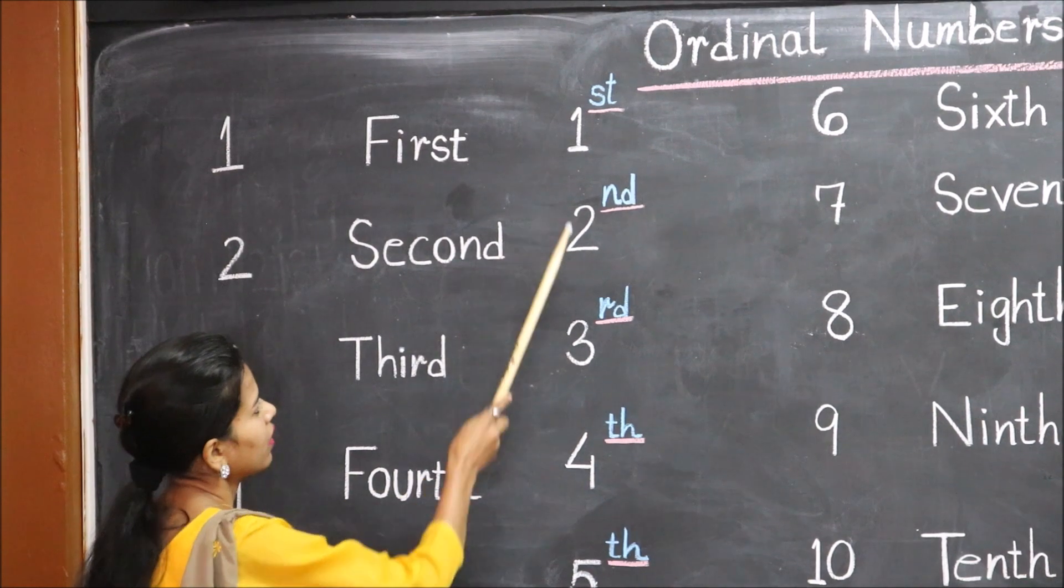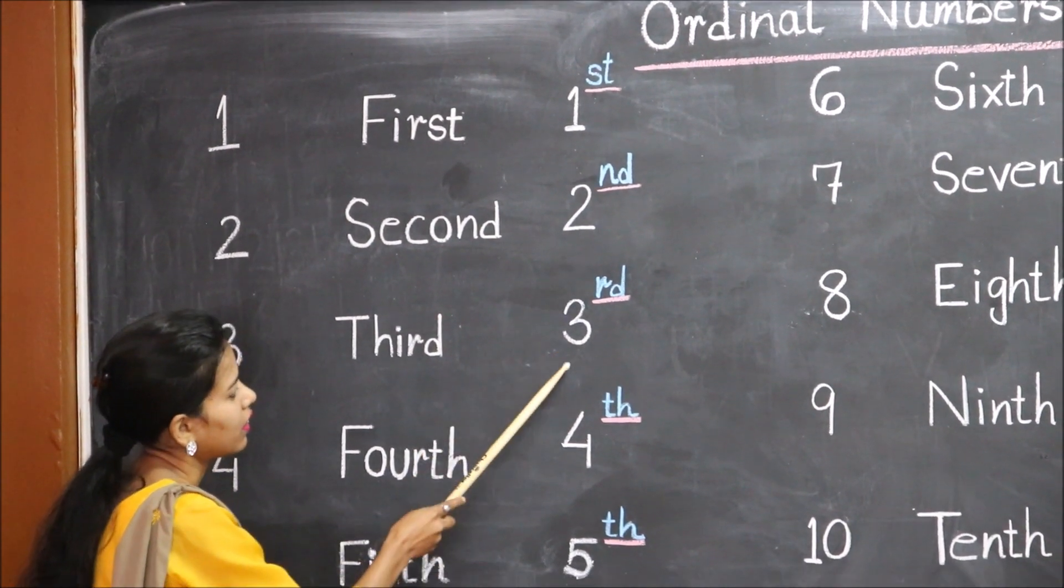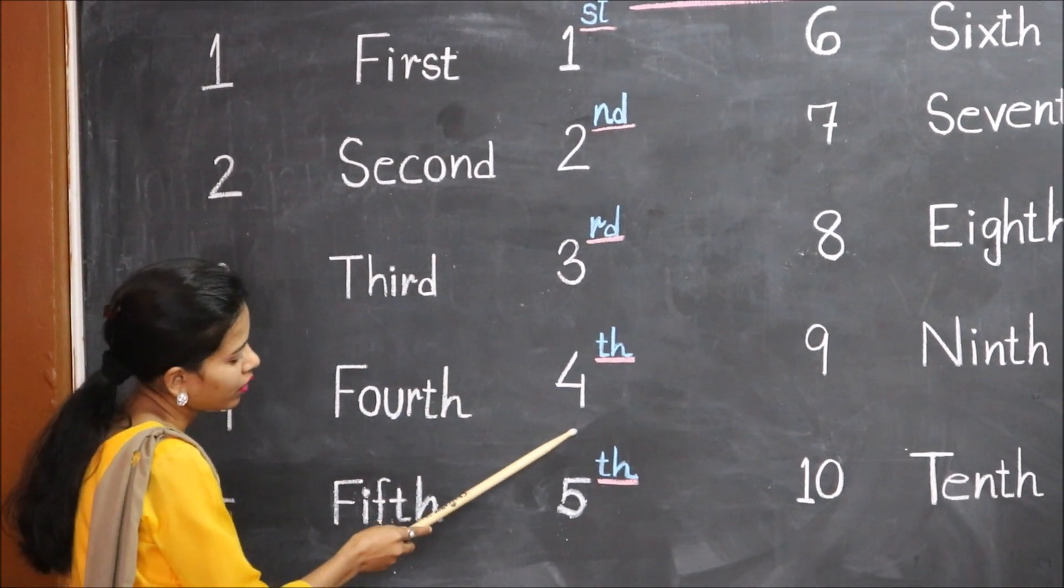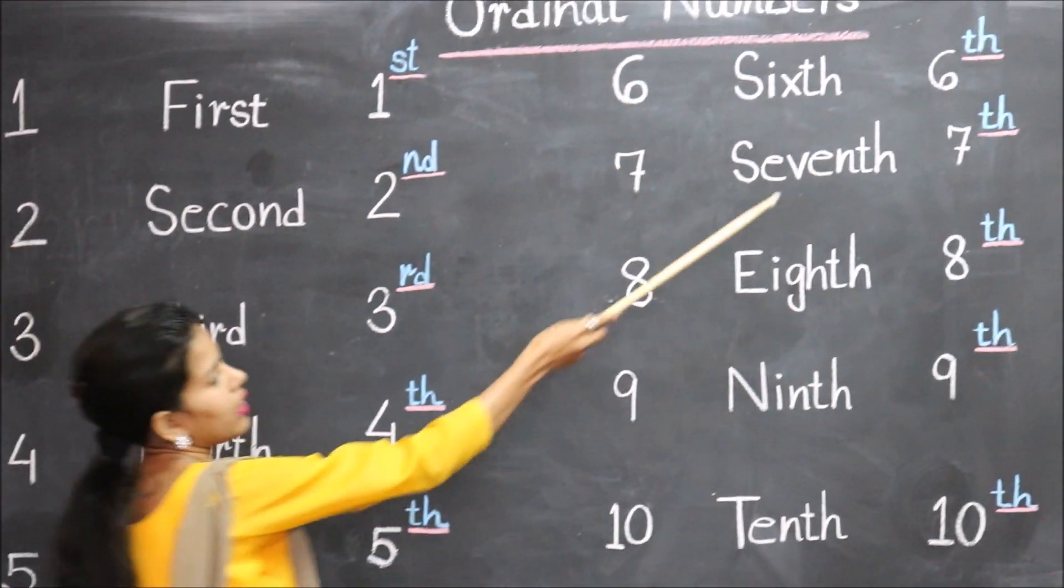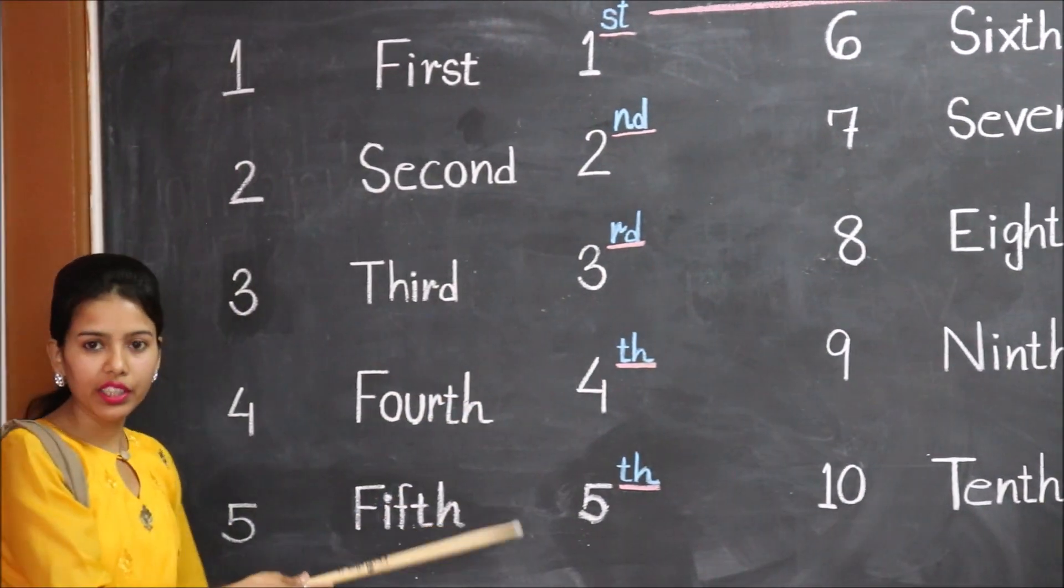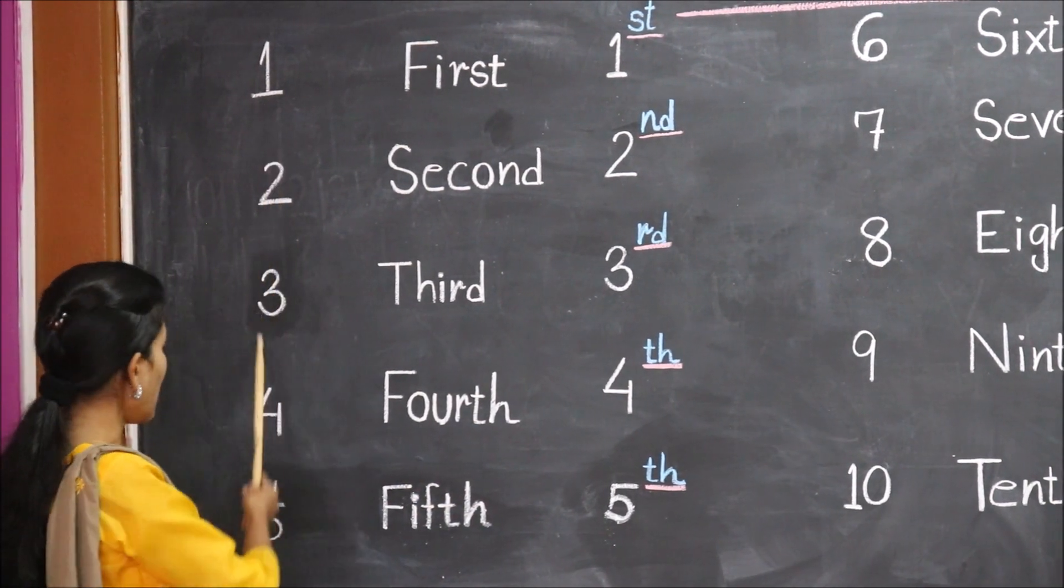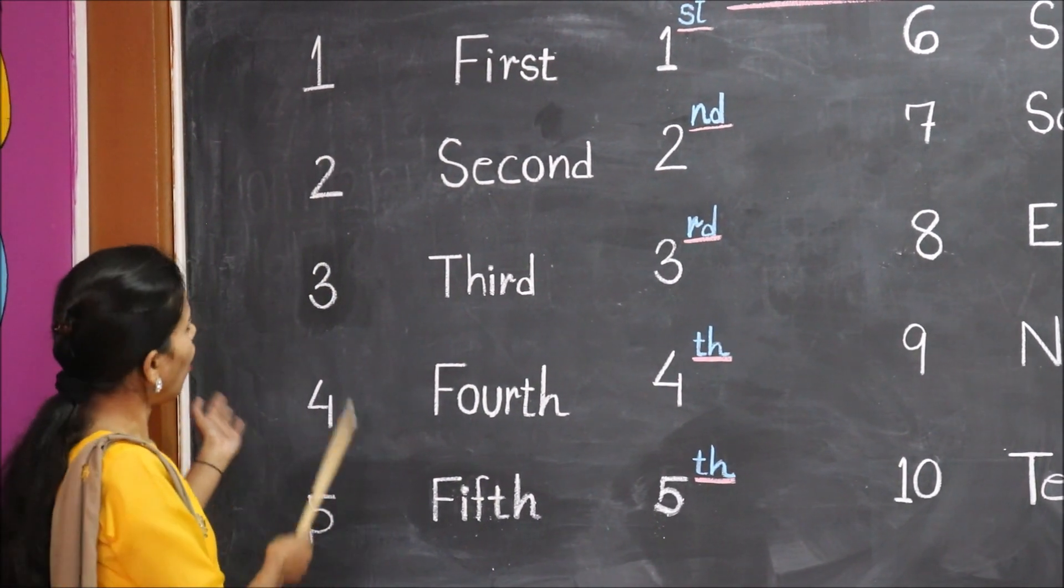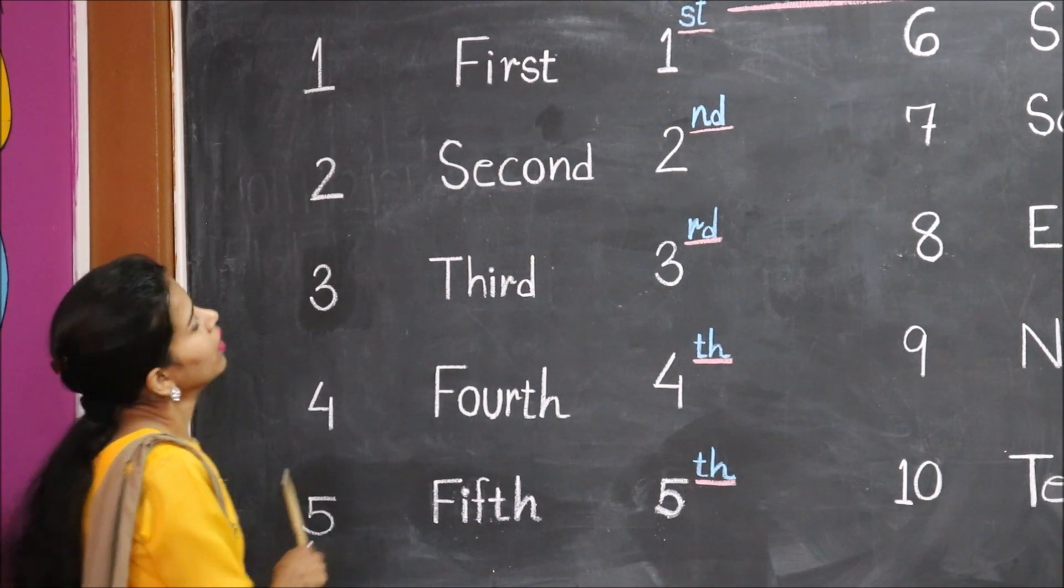when we say first, second, third, fourth, fifth, sixth and so on, they are called ordinal numbers. And these are cardinal numbers or normal numbers. So,